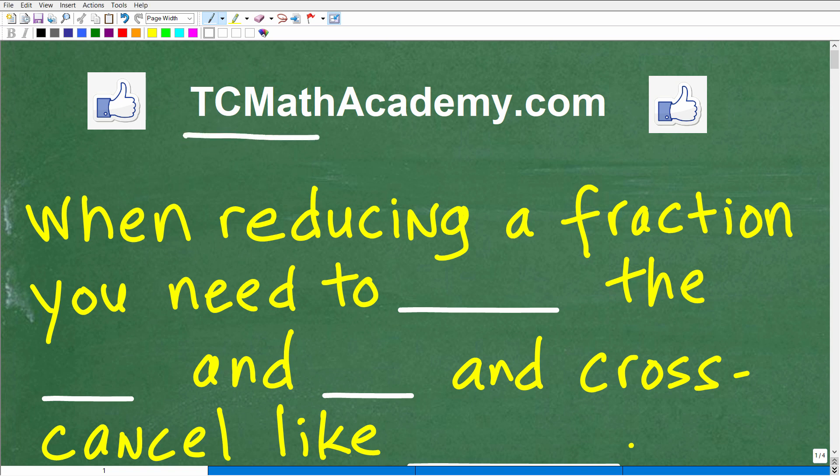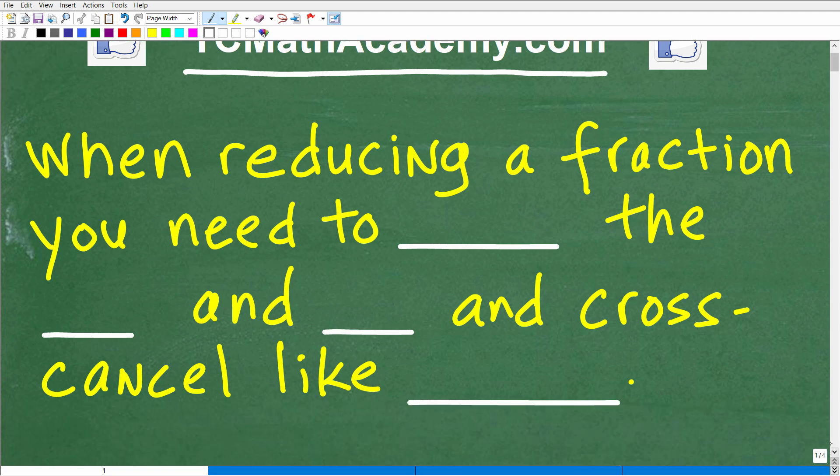This is John from TCMathAcademy.com and we're going to take a look at this nice little question that has to deal with fractions. This is a fill in the blank question, so it says when reducing a fraction you need to blank the blank and blank and cross cancel like blanks. If you think you can figure this out, go ahead and put your answer into the comment section.